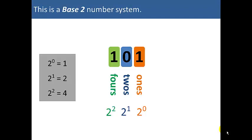Now, the rightmost digit is the 1's digit, which represents 2 to the power 0. The middle digit is the 2's digit, which is 2 to the power 1. And 2 squared, or 2 to the power 2, is the 4's digit.